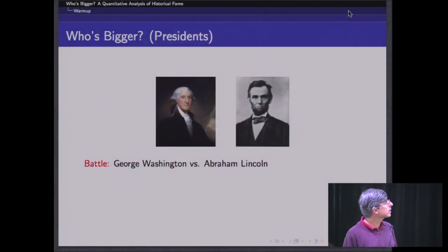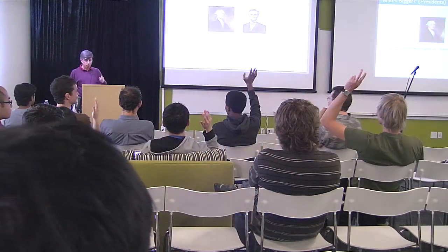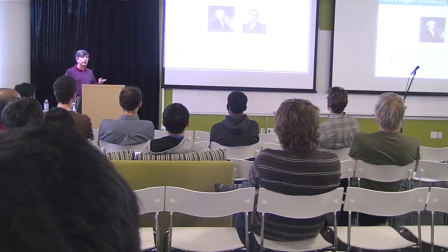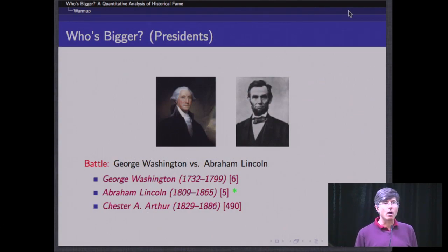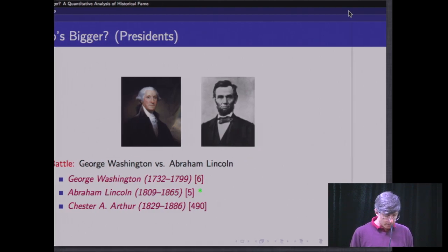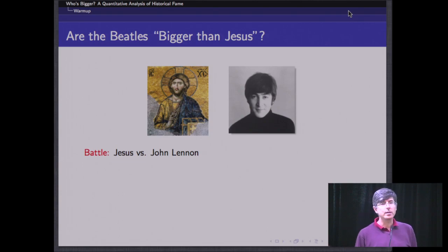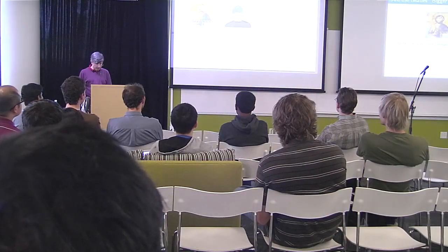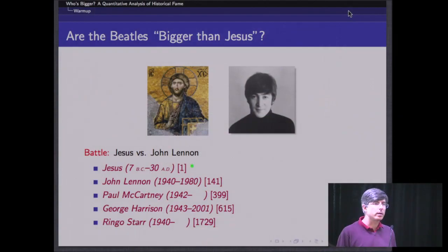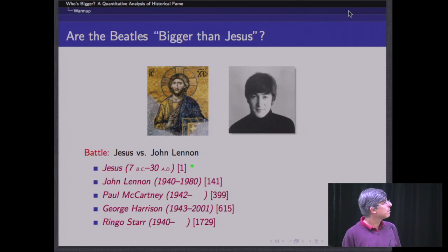Let's try it just to see what we're doing. Who's bigger historically — George Washington or Abraham Lincoln? Abraham Lincoln is ranked fifth and sixth among the most important historical figures. The least important president we have is Chester Allen Arthur, who many of you may never have heard of — he came in at 490th. During the 60s, John Lennon said the Beatles were bigger than Jesus. Is this true or false? We have Jesus as the single most historically significant figure.